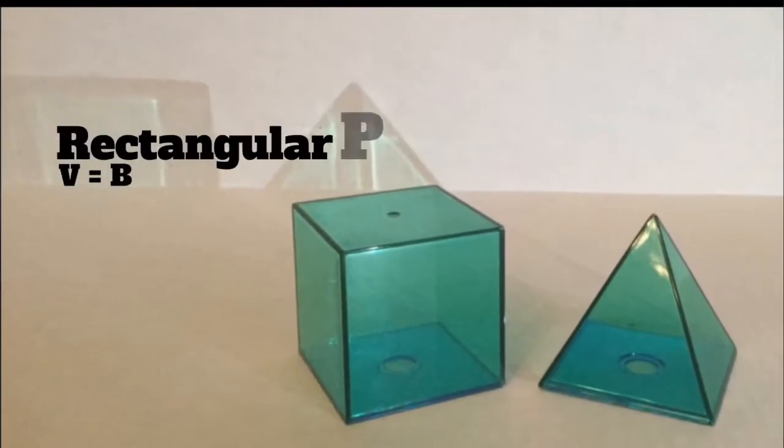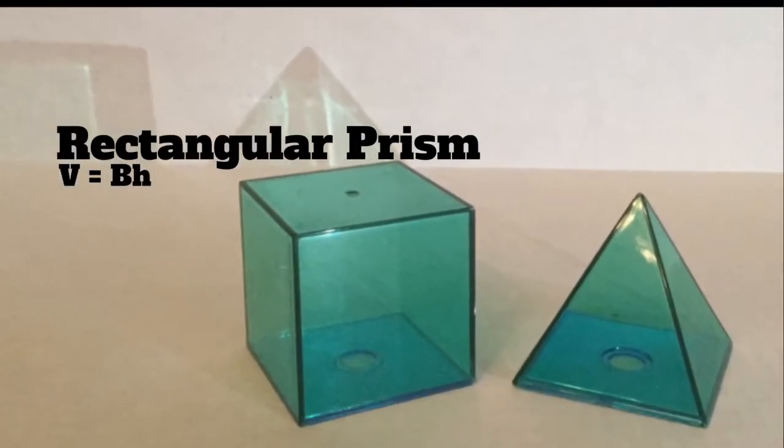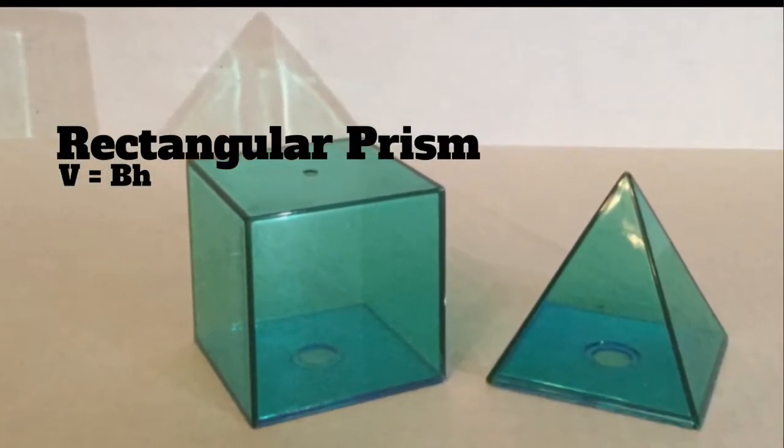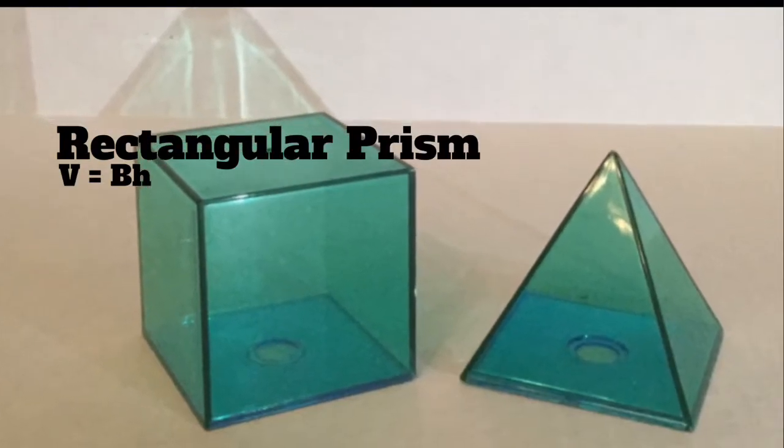Let's first look at the rectangular pyramid by relating it to the rectangular prism. The volume formula for the prism was big B times H.